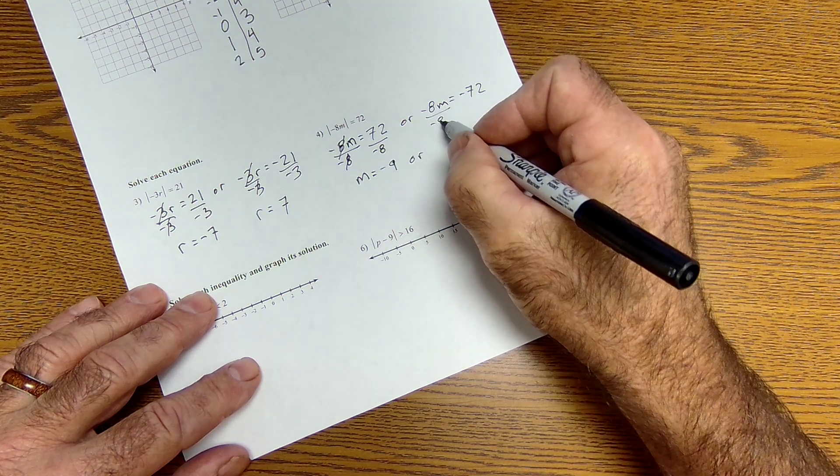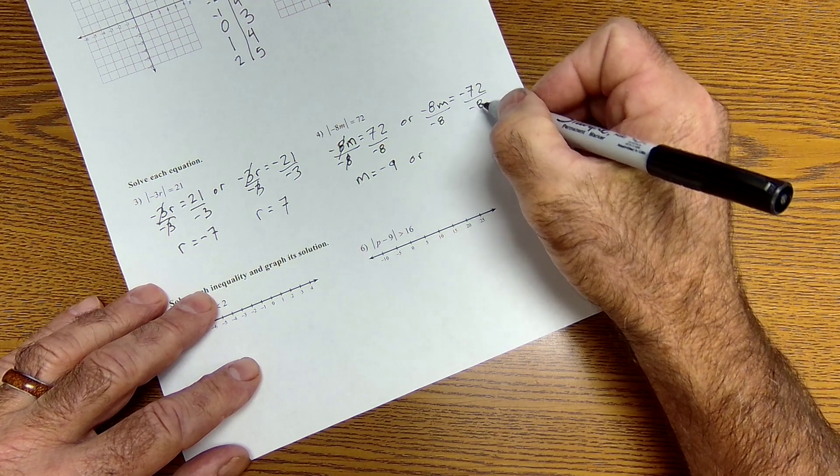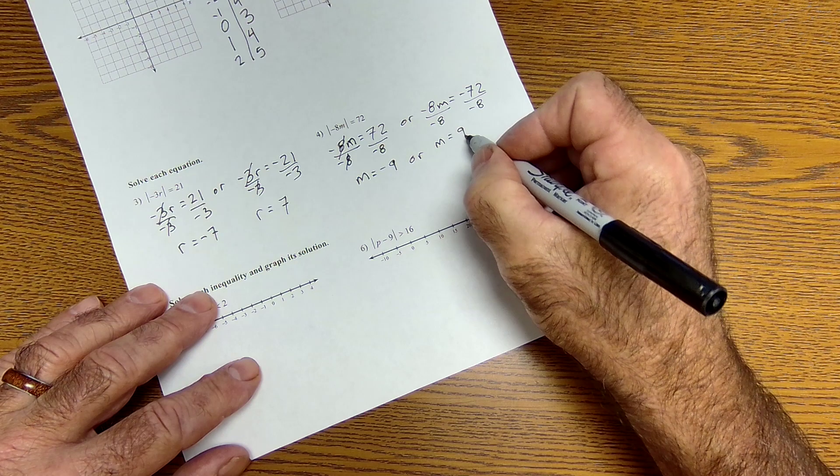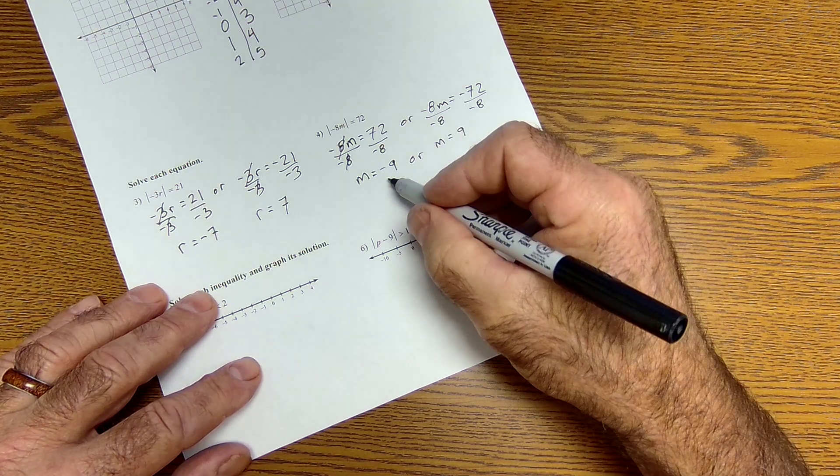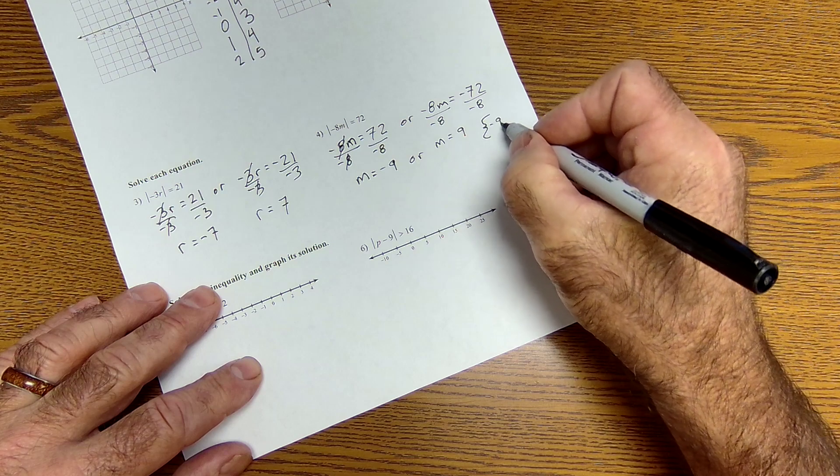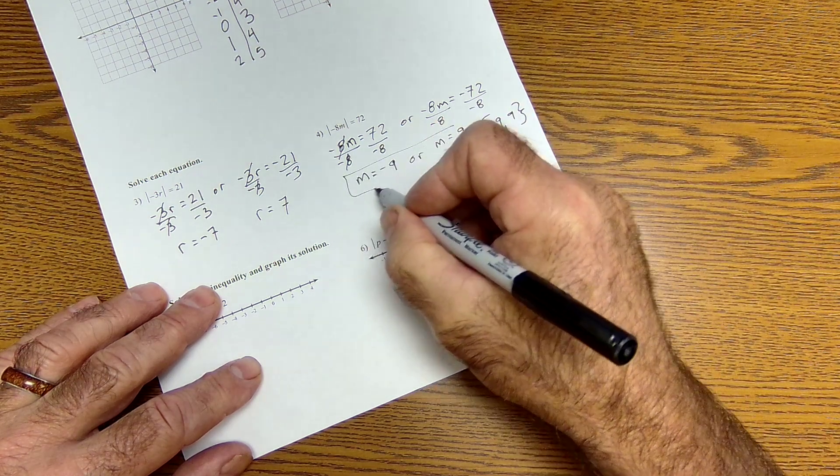Same thing here. I'm going to divide by negative 8. Difference is negative divided by a negative is now positive. So here m can equal 9. So I have two solutions, negative 9 or 9. Sometimes they're written in a solution set like this. Negative 9 or 9. Or box them like that.